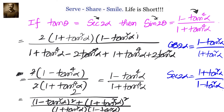Let us recap. We were given tan θ equals sec 2α and had to prove sin 2θ equals (1 minus tan⁴ α)/(1 plus tan⁴ α). We used sin 2θ = 2 tan θ/(1 + tan² θ) and expressed cos 2α and sec 2α in terms of tan α. Substituting into sin 2θ, we arrived at (1 minus tan⁴ α)/(1 plus tan⁴ α).